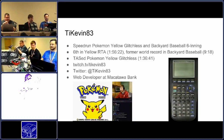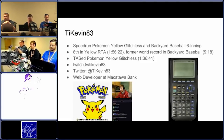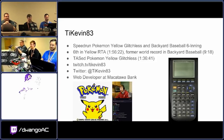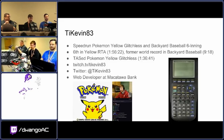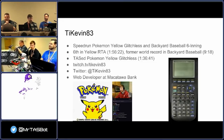I'm TI Kevin 83. I speedrun Pokemon Yellow's glitchless category in RTA and also the Backyard Baseball six-inning and nine-inning categories. I'm sixth in Yellow RTA, and I'm a former world record holder in Backyard Baseball. I just did the TAS of Pokemon Yellow's glitchless category. I'm on Twitch and Twitter at TIKevin83, and I do web development for Macatow Bank in Michigan.